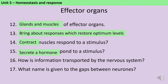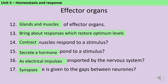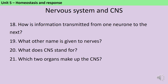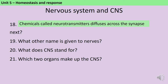Information is transported by the nervous system as electrical impulses and the gaps between neurons are called synapses. To get across the synapses the signal is transmitted in the form of a chemical called a neurotransmitter, which can diffuse across the synapse. Nerves are also known as neurons and the CNS is the central nervous system, made up of the brain and the spinal cord.